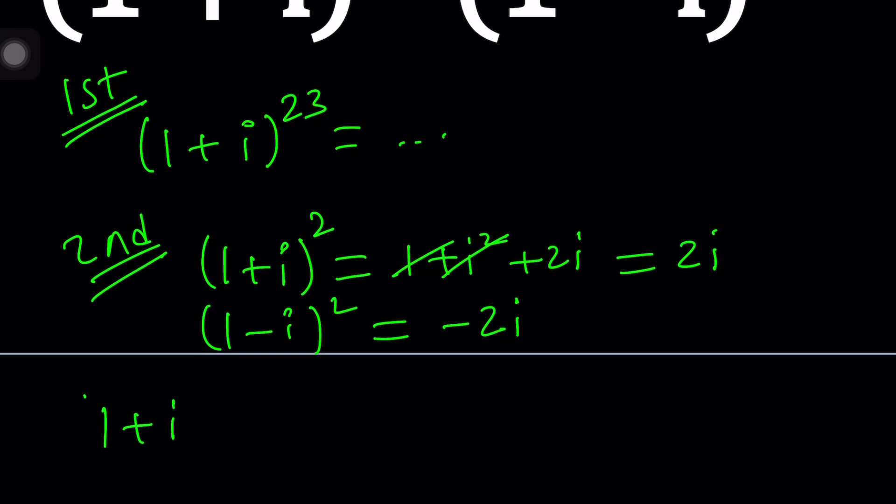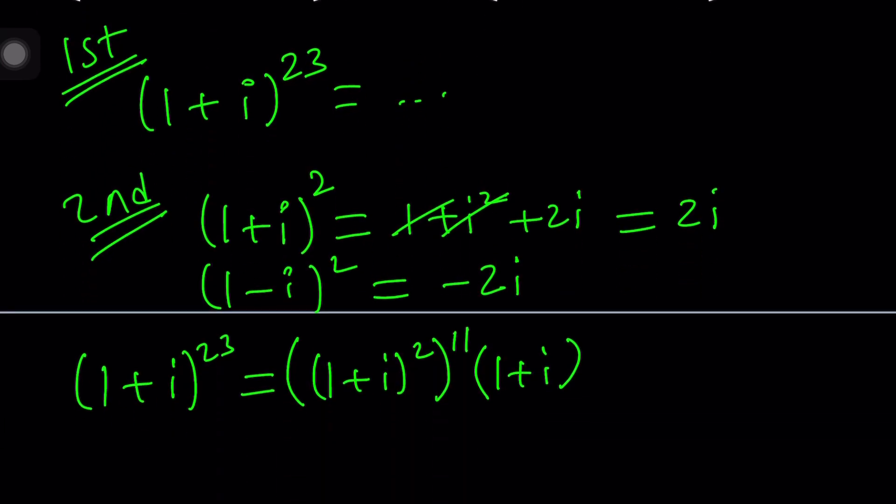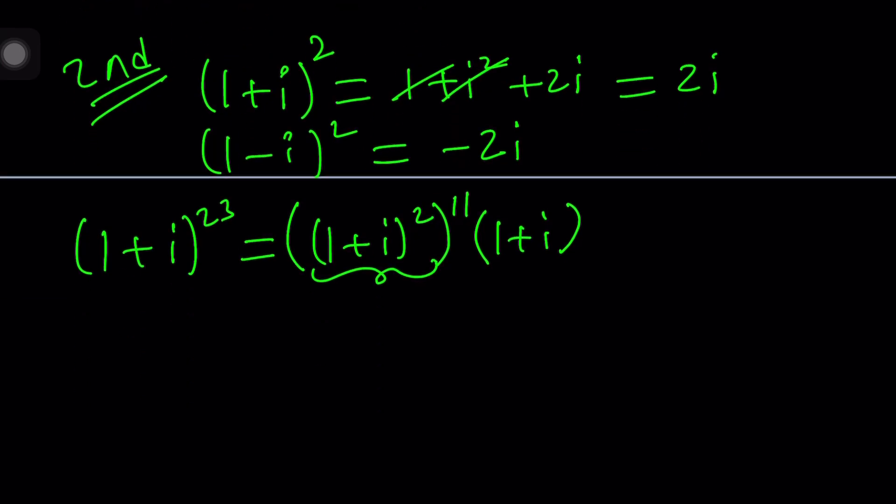To get (1 + i) to the power 23, we need to take (1 + i) to the second power first, and then raise it to the 11th power, which gives us (1 + i) to the power 22, and just multiply by another (1 + i), and that'll do the trick. Now, we have this situation where we know that this is equal to 2i, so we now have 2i to the 11th power multiplied by (1 + i).